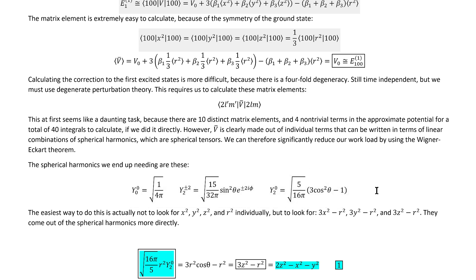You may ask, how do I know it? And the honest answer is simply that I've done the problem before. Now, the easiest way to work out the right substitutions is actually not to look at x squared, y squared, z squared, and r squared individually, but to look at these linear combinations of them. They come out of the spherical harmonics more directly. And again, I know that because I've done this before.